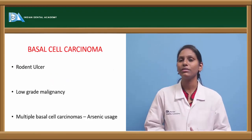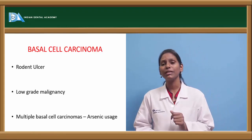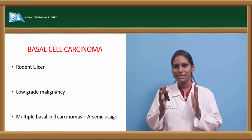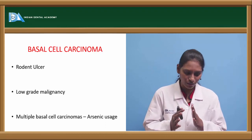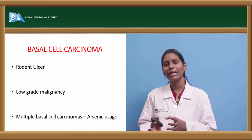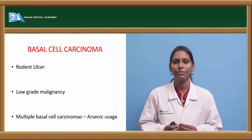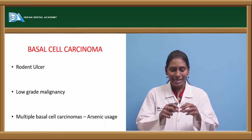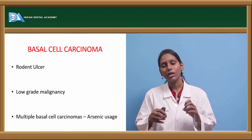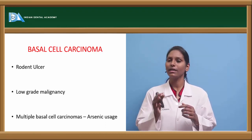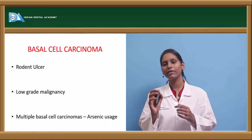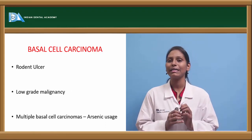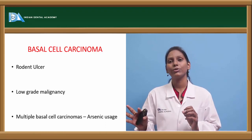Among the malignant tumors involving skin, the first tumor that comes to mind is basal cell carcinoma. Basal cell carcinoma is an invasive cancer of the basal cell of the epidermal layer. It is also called as rodent ulcer because it eats away all the tissue that comes in contact with it. One good thing about basal cell carcinoma is it is of low-grade malignancy and it is a slow-growing tumor.